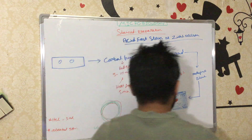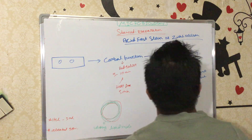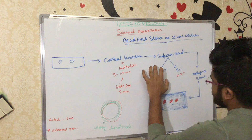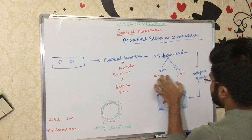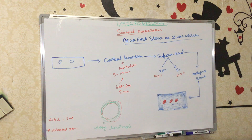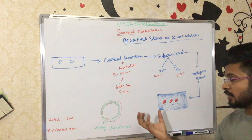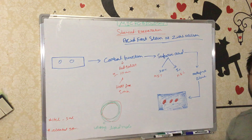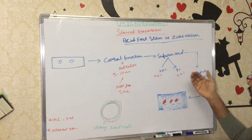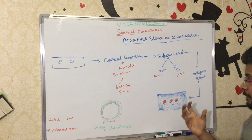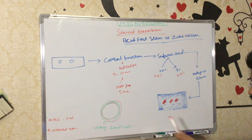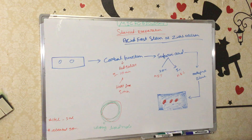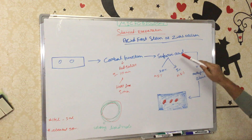We use 20% sulfuric acid for Mycobacterium tuberculosis and 5% for Mycobacterium leprae because the lipid concentration in M. tuberculosis is very high compared to M. leprae. M. leprae also has a lipid barrier, but it is much thinner and less significant. After sulfuric acid treatment, we wash the slide again.